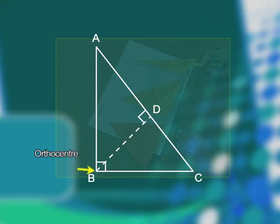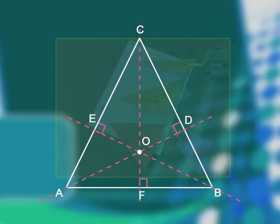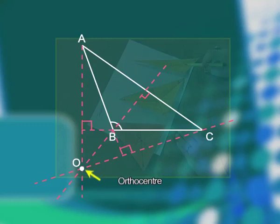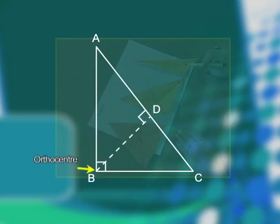Dear students, we have seen the position of orthocenter in three different types of triangles. In an acute triangle, the orthocenter lies inside the triangle. In an obtuse triangle, the orthocenter lies outside the triangle. And in a right triangle, the orthocenter lies on the vertex where the 90-degree right angle is formed. You can verify this activity by taking different types of triangles on your own.